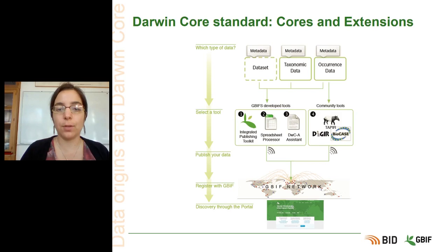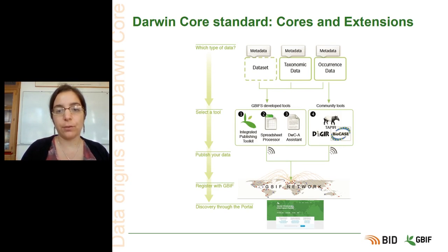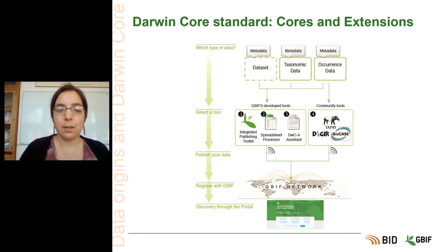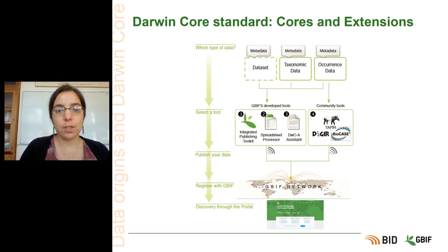You can also have occurrence datasets. Occurrence data covers all specimens or observations held in your institution. So if you have occurrence data — that is, observations or specimens — or taxonomic data such as checklists or red lists, along with the metadata describing your data, you can publish them to GBIF using several tools, mainly the Integrated Publishing Toolkit, or IPT.